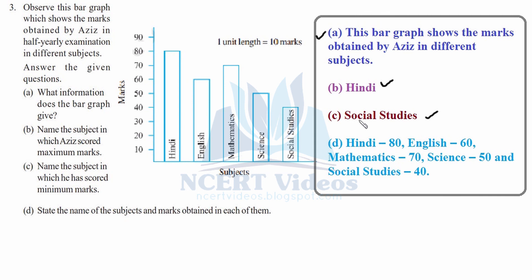State the name of subjects and marks obtained in each: Hindi 80, English 60, Mathematics 70, Science 50, and Social Studies 40. So this was question number three.